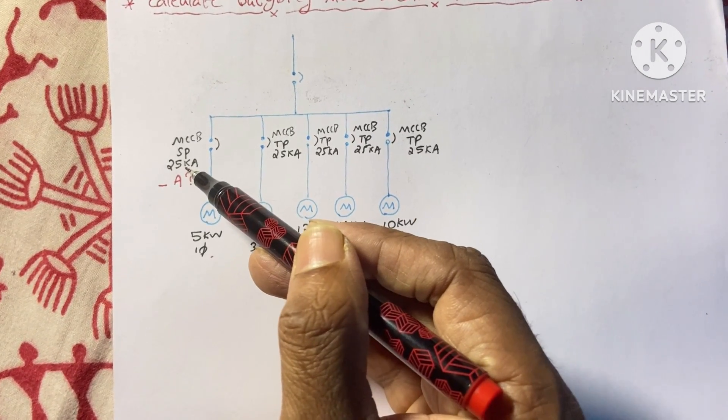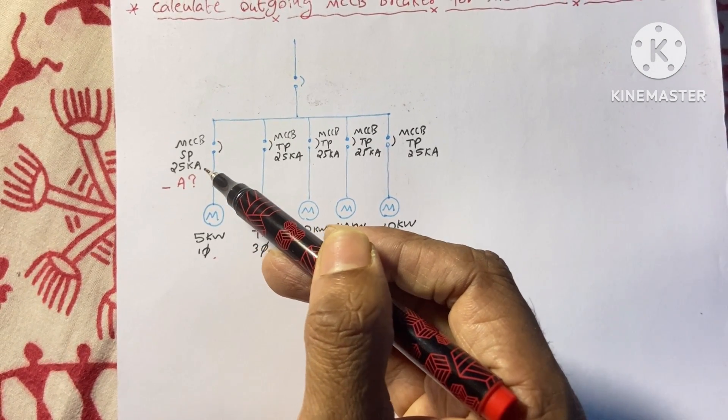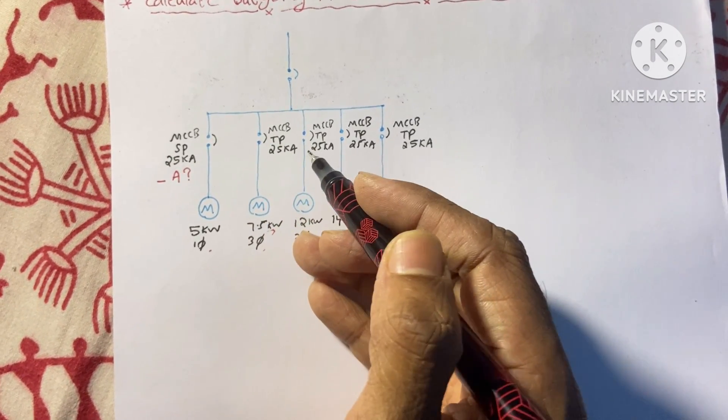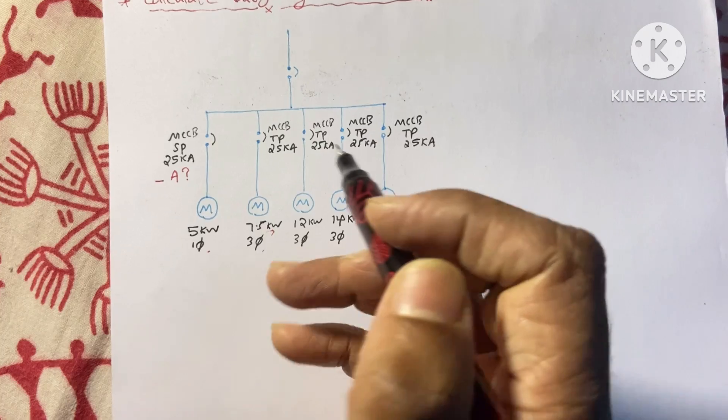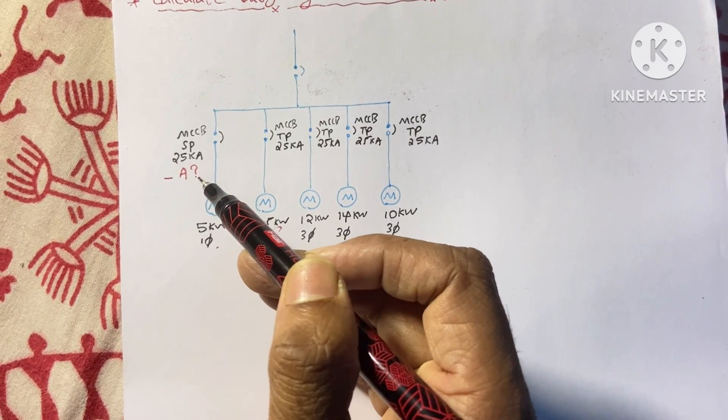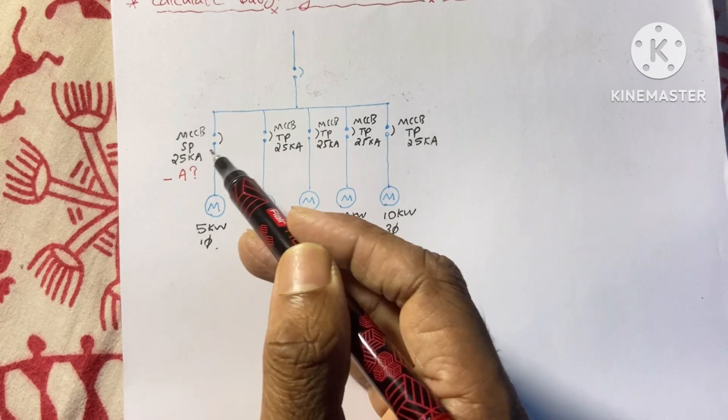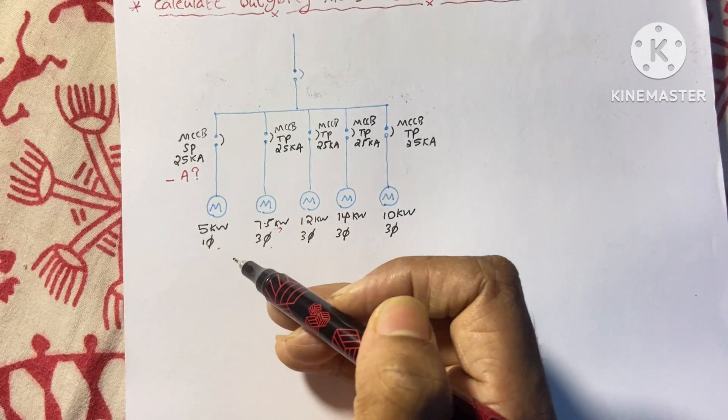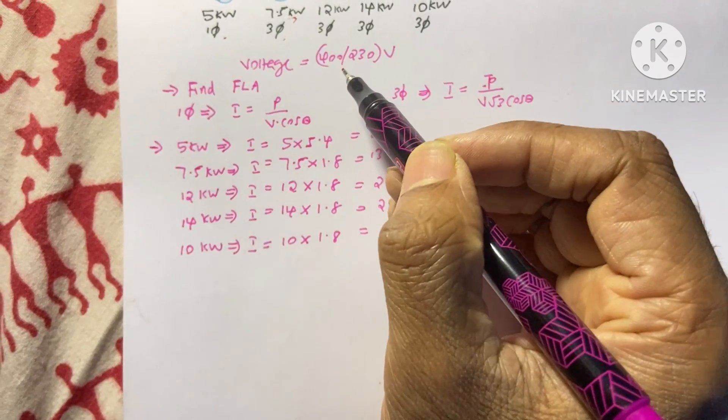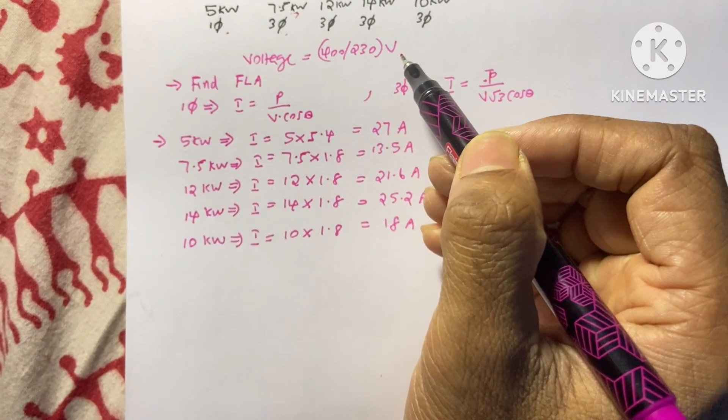And generally 25 kilo ampere short circuit capacity MCCBs are used for the outgoing breakers. So now we need to find what is the ampere rating of all these MCCBs that we are going to find. Here we have the voltage of 400 for three phase and 234 single phase.